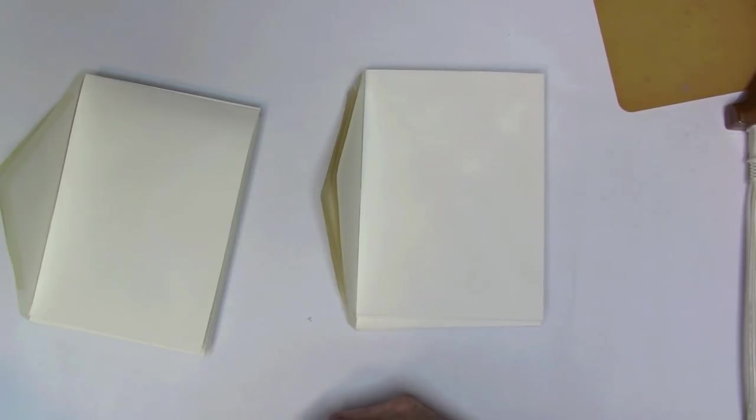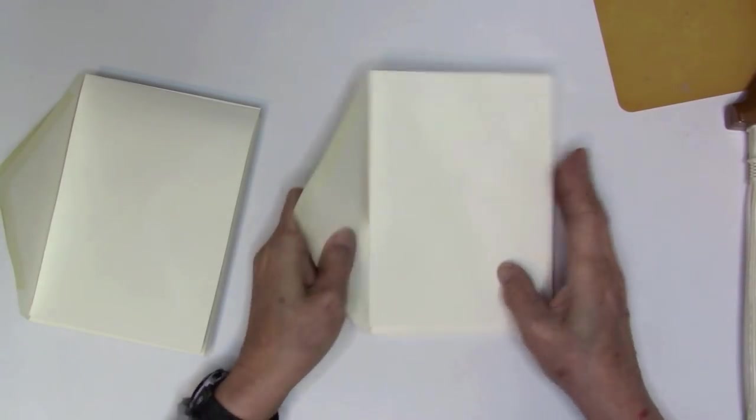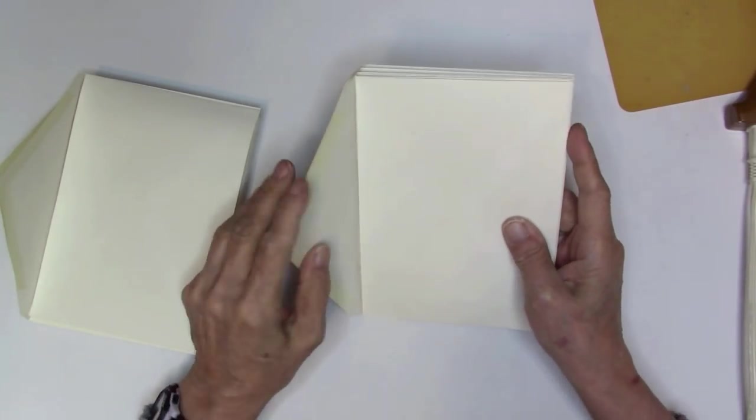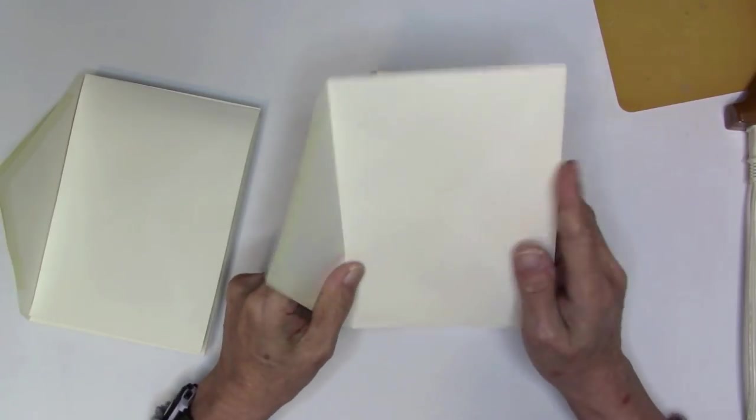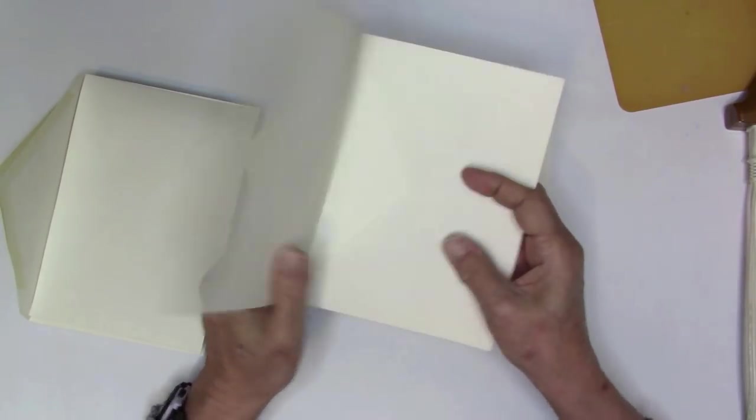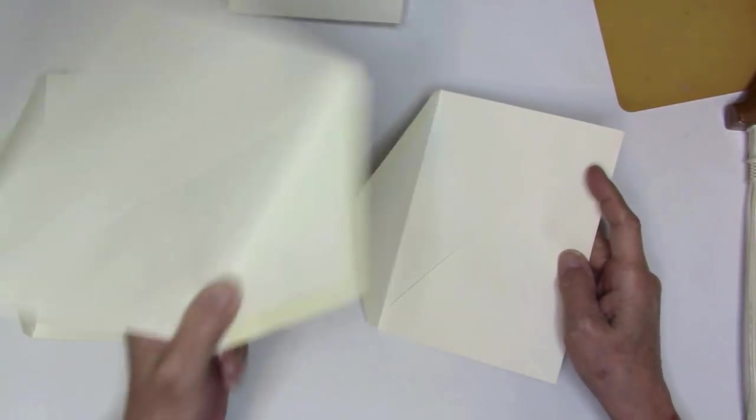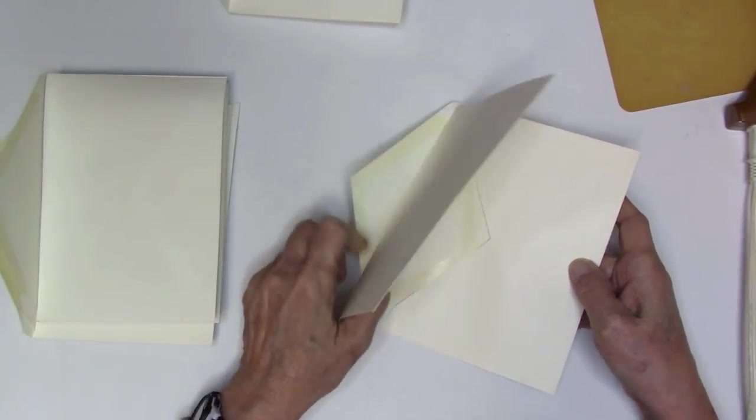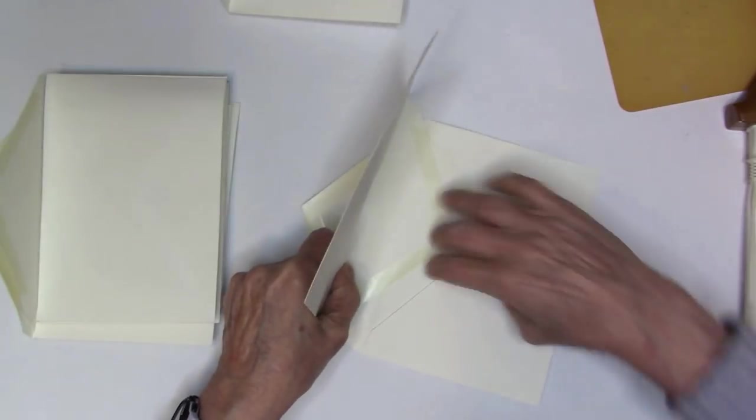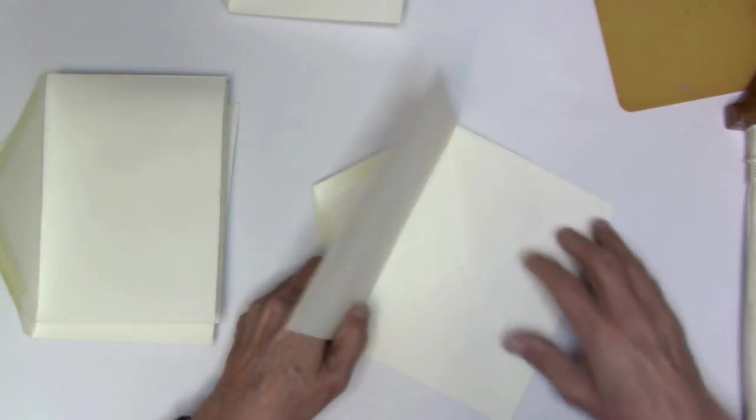And I was watching Marami and she was making an album using envelopes. So she was basically taking the flap and putting it inside the envelope, like this.